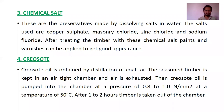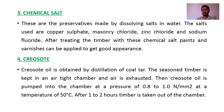Next, we have chemical salts. These are preservatives made by dissolving salts in water. The salts used are copper sulfate, masonry sulfate, zinc chloride, and sodium fluoride. After treating the timber with these chemical salts, paints and varnishes can be applied to get a good appearance. You take any of these salts, dissolve it in water, and apply it on the timber. The timber will get a protective layer to avoid the attack of fungi and insects, and paint can be applied afterward for aesthetics.